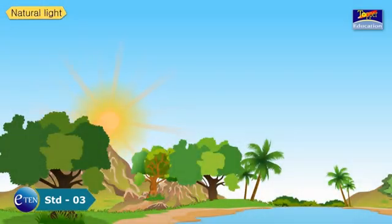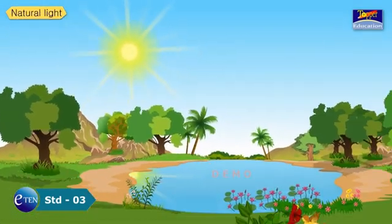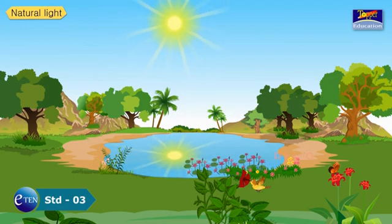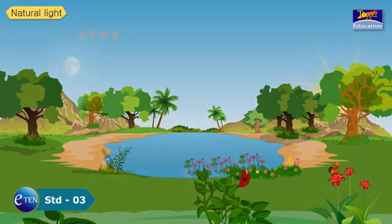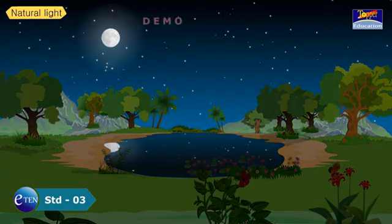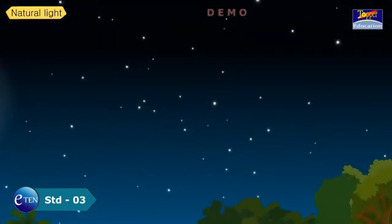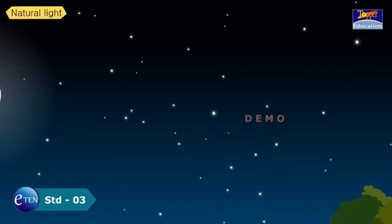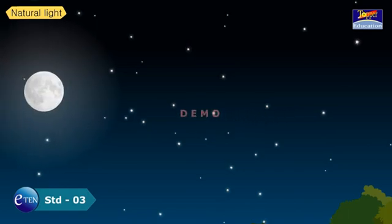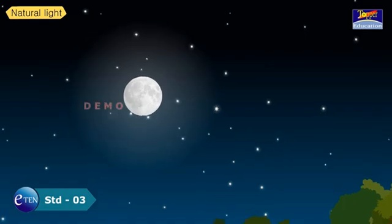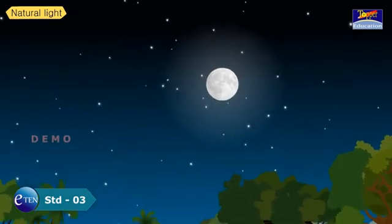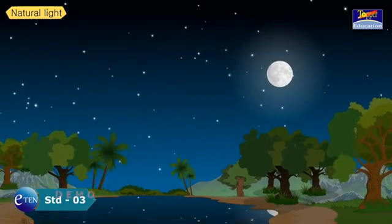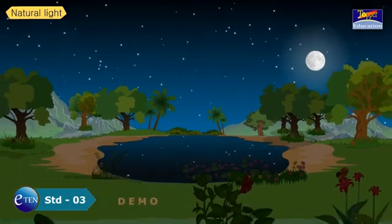Natural Light. Light travels from a light source. Sun is the main source of natural light. Other forms of natural light are other stars and the moon. Stars provide a very small amount of light at night because they are very far from earth compared to the sun. A full moon provides a little light at night, but light from the moon is just light reflected from the sun.